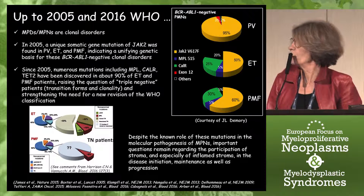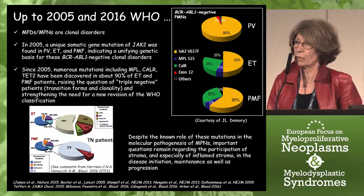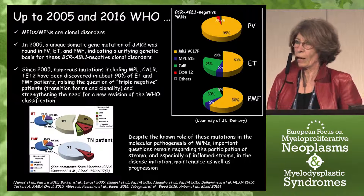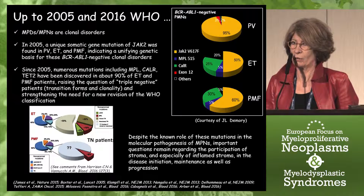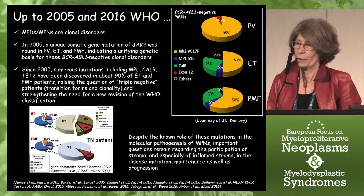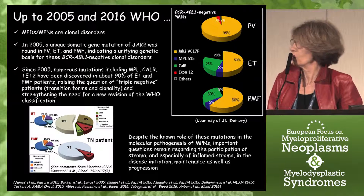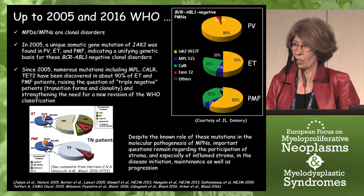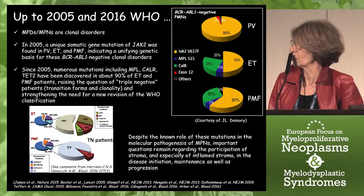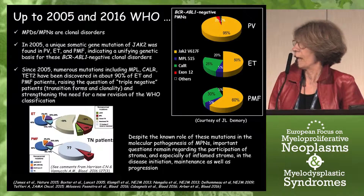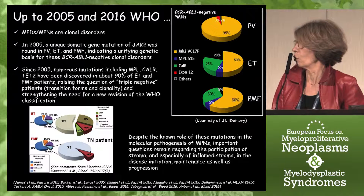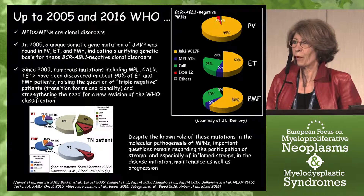Since that time, numerous mutations, including those from MPL, CALR, and TET2, have been discovered in about 90% of ET and PMF patients, raising the recent question concerning the triple-negative patients, and especially their transition forms and their clonality, particularly for ET patients, and strengthening the need for a new WHO classification.